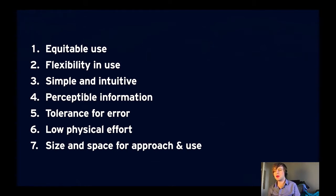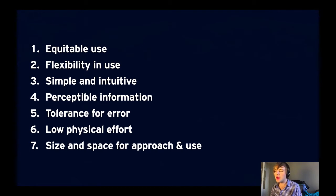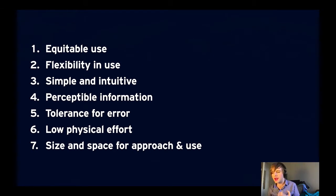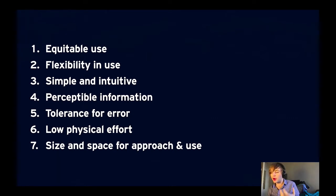The first principle is equitable use — the design is useful and marketable to people with diverse abilities. Second, flexibility in use — the design accommodates a wide range of individual preferences and abilities. Third, it's simple and intuitive — easy to understand regardless of the user's experience, knowledge, language skills, or concentration level. Fourth, perceptible information — it communicates necessary information effectively regardless of ambient conditions or the user's sensory abilities. Fifth, tolerance for error — it minimizes hazards and adverse consequences of accidental actions. Sixth, low physical effort — usable efficiently and comfortably with minimum fatigue. Seventh, size and space are appropriate — you can reach and manipulate everything regardless of your body size, posture, or mobility.